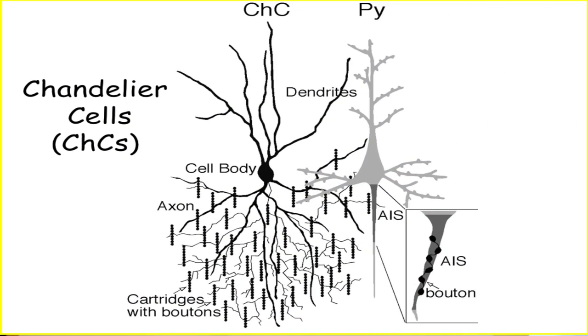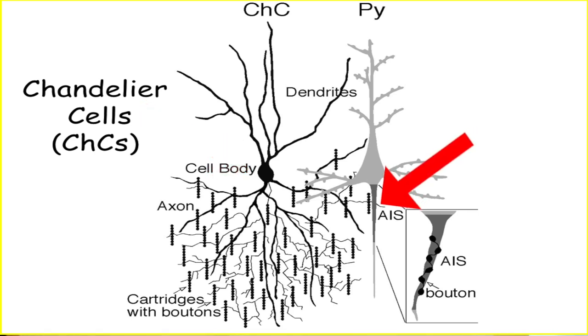To identify molecular factors important for this process, Yilin Tai and Nicholas Gallo in the lab developed a strategy that allows us to manipulate the adhesion molecules located at the AIS and axon, and simultaneously label the chandelier cells so that the contact between these two neuron types could be evaluated.